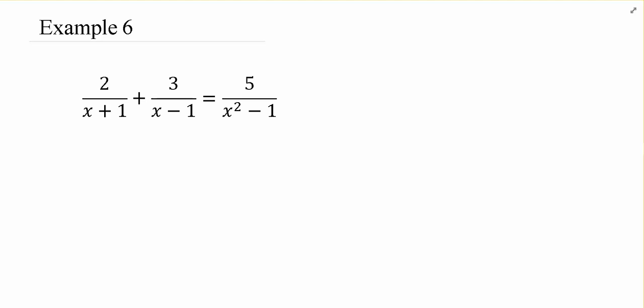What sometimes is helpful is to factor all the denominators. Now in this case, the x squared minus 1, hopefully you can kind of picture in your head as x plus 1, x minus 1, which happens to be the factors that are there already. So hopefully we can do this one without actually literally writing out the factored version, but sometimes it does help.